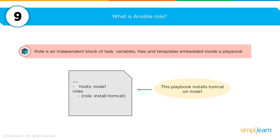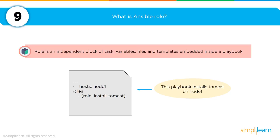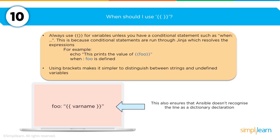Moving into Ansible, one question you'll be asked is: what is an Ansible role? A role is an independent block of tasks, variable files, and templates embedded within a playbook. The example on screen shows one role within a playbook — in this case, a role to install Tomcat on a node. As with the Puppet class question, it's good to have memorized one or two roles so you can speak knowledgeably about Ansible.